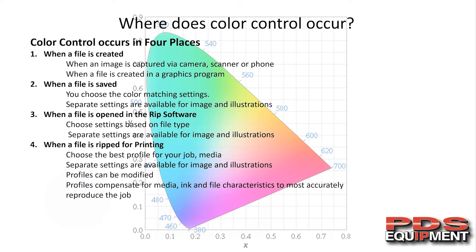Where does color control occur? Color control occurs in four places. First, when a file is created — when you hit File New in Illustrator, Photoshop, CorelDRAW, it automatically creates settings. When you take a picture with your camera, scanner, or cell phone, it has settings that automatically apply, and you can go in and change DPI and other settings, but the defaults usually work just fine. Second, when a file is saved — the defaults usually work, but you can choose your color match settings. Separate settings are available for image and illustration, and it's important to understand the difference because we deal with them differently through the workflow process.